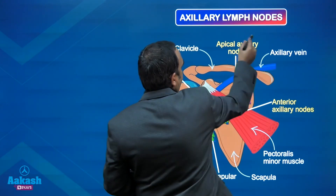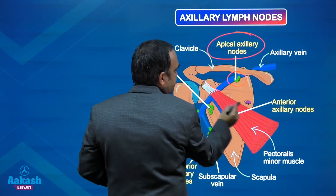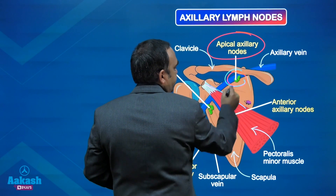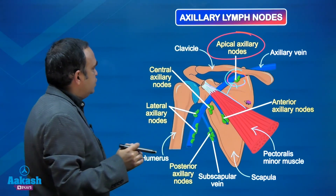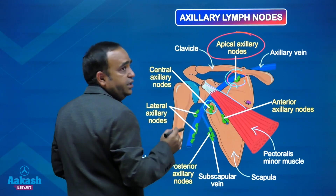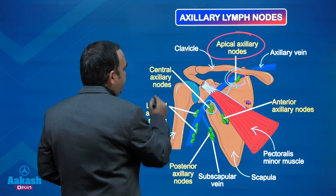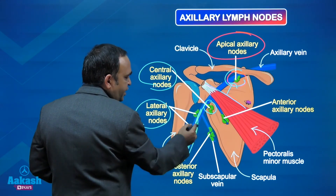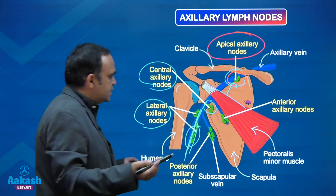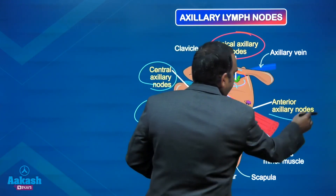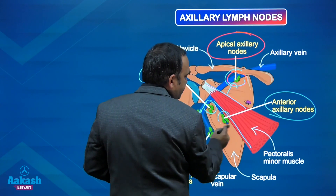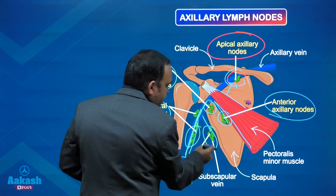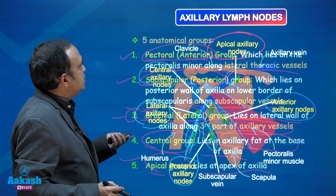Starting with the apical axillary lymph nodes - that is at the apex, above the tendon of pectoralis minor. Then the central group is in the central part of the fat in the axilla. The lateral ones are along the third part of the axillary vein and axillary vessels. Then the anterior group runs along the pectoralis minor along the lateral thoracic vessels, and the posterior one runs along the subscapular vessels.